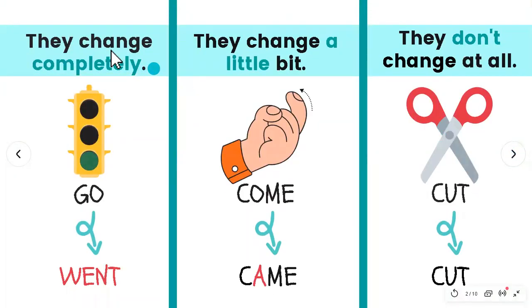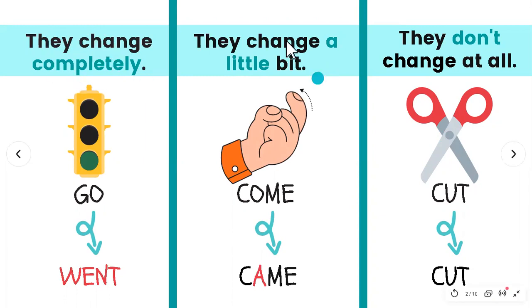Something that we need to know about irregular verbs are these three things that we have here. Hay tres cosas importantes que saber de los verbos irregulares, and they are that they change completely, they change a little bit, or they don't change at all.